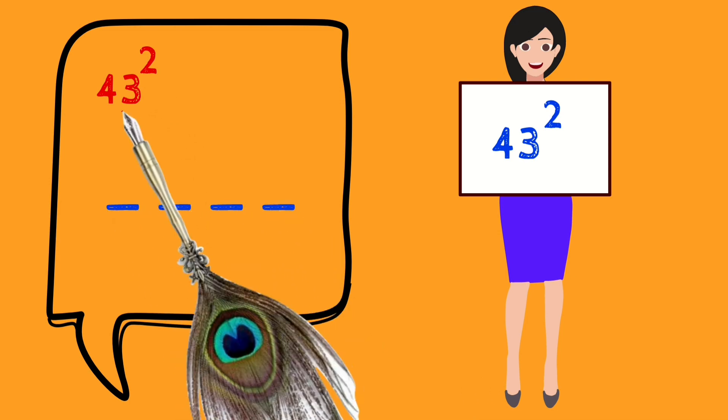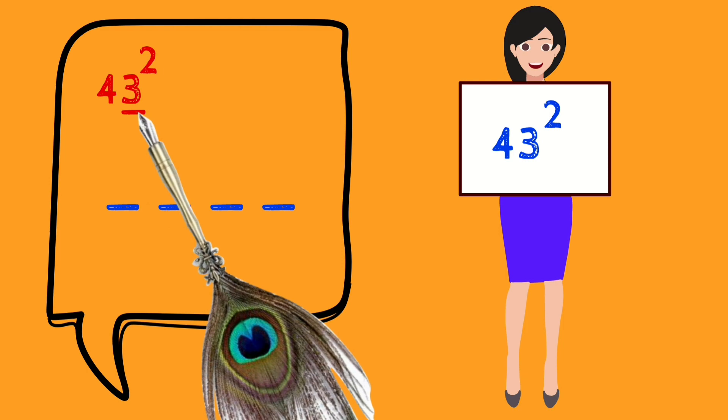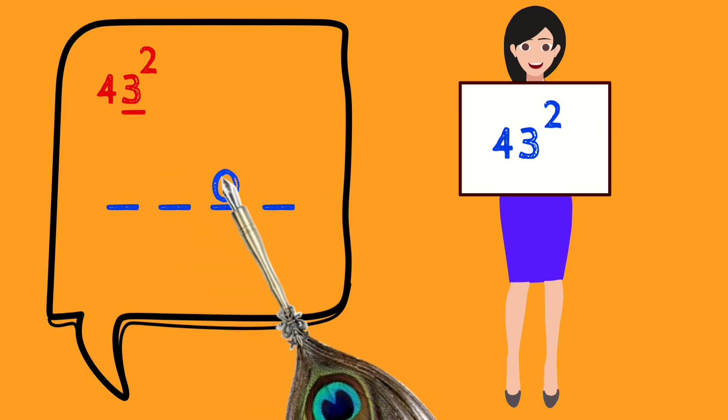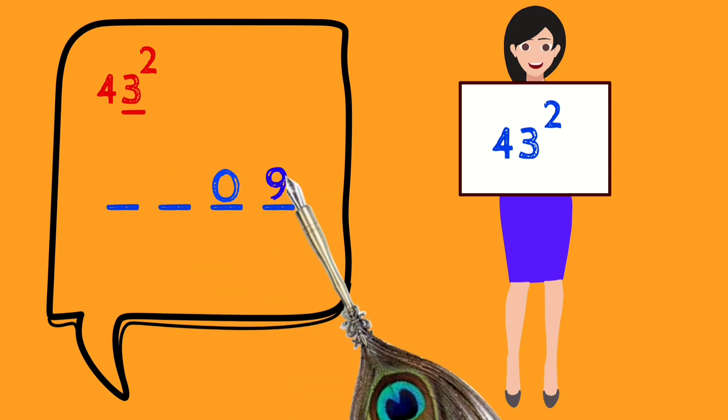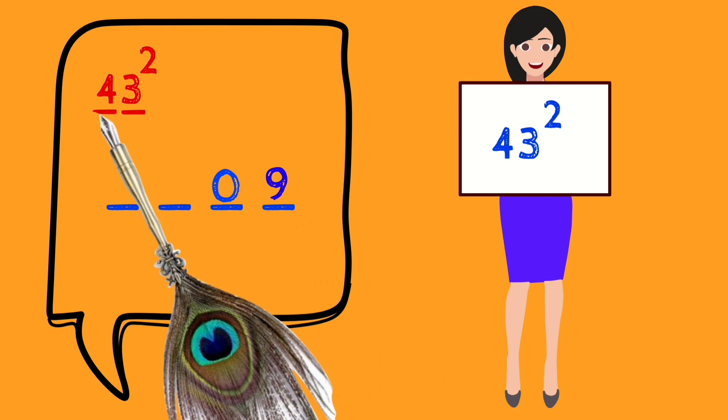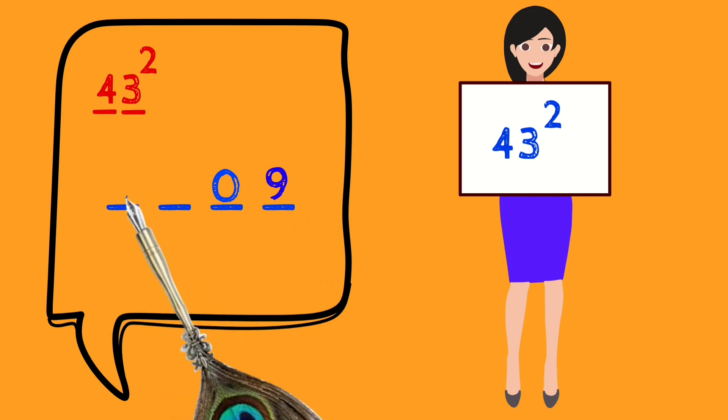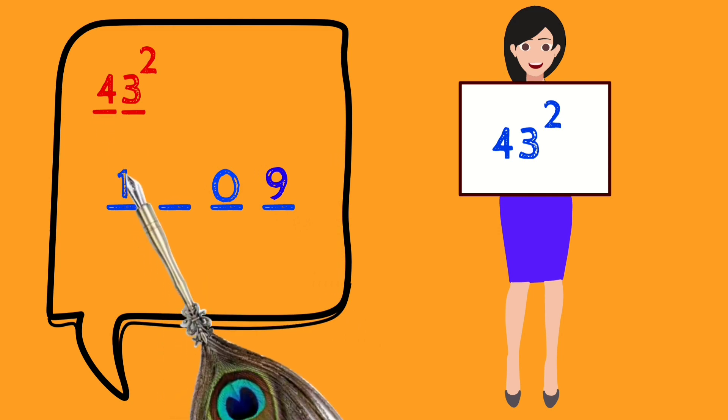First, square the number 3. It becomes 09. Fill it in the last two blanks. Then square the number 4. It becomes 16. Fill it in the first two blanks.